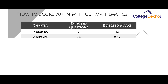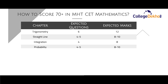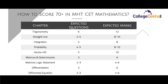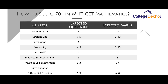From the Straight Lines chapter, you can expect 4 to 5 questions for 8 to 10 marks. For Integration, you can expect 4 questions for a total of 8 marks. For Probability, you can expect 4 to 5 questions for 8 to 10 marks. For Vectors and 3D, you can expect 5 questions for 10 marks. For Matrices and Determinants, you can expect 3 questions for 6 marks. For Logic and Statements, you can expect 2 to 3 questions for 4 to 6 marks.